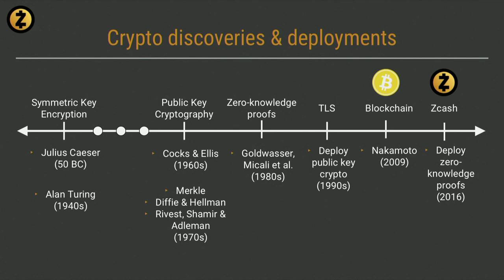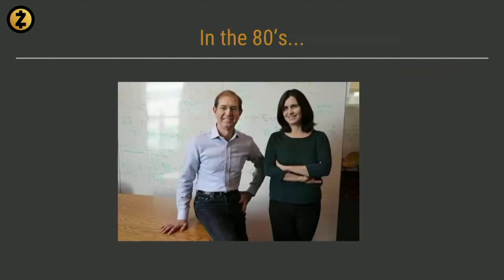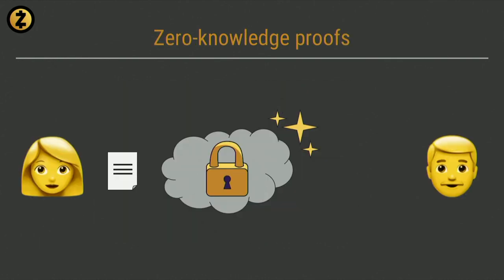During the 1980s, a pair of researchers named Goldwasser and Micali came up with a third new invention. Their discovery was zero knowledge proofs. Zero knowledge proofs are an even more mind-boggling concept than public key cryptography is, and lots of people may be forgiven for not really believing that this can work.